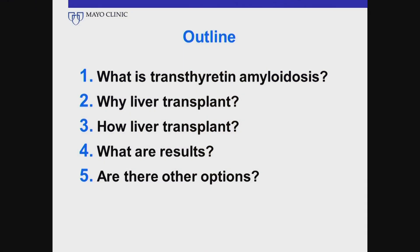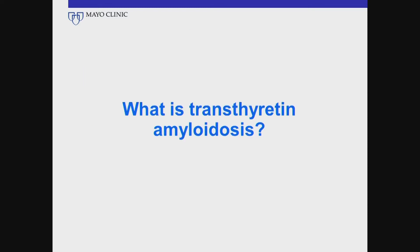We're going to talk about five points. We'll briefly talk about what transthyretin amyloidosis is, why we think about liver transplant, how we do it, what are the results, and are there other options.